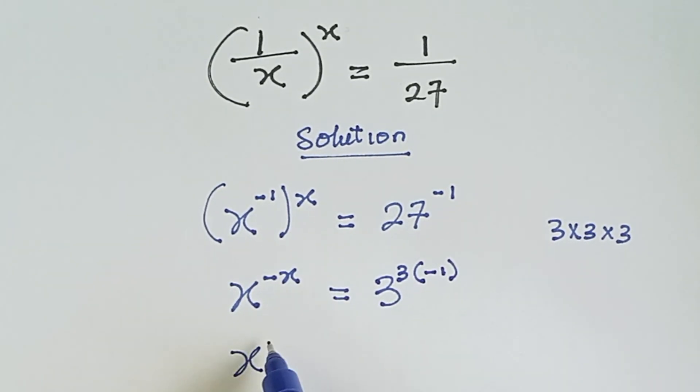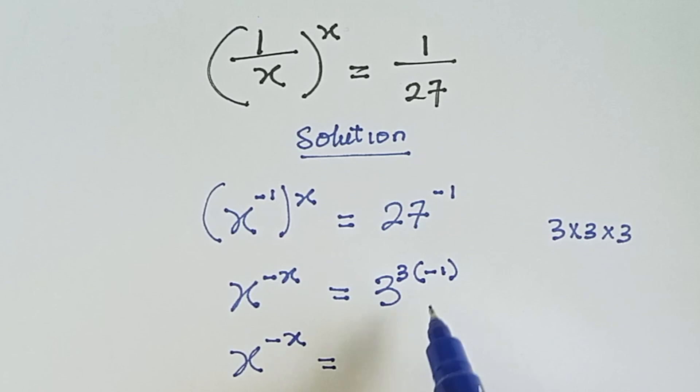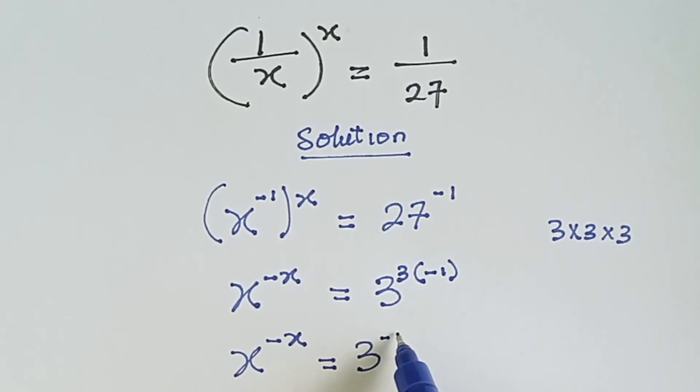From there, we multiply the 3 and the minus 1. So we have 3 times minus 1 gives us minus 3.